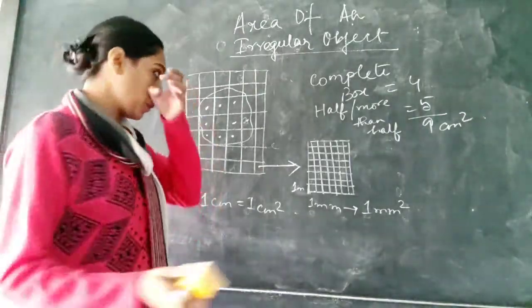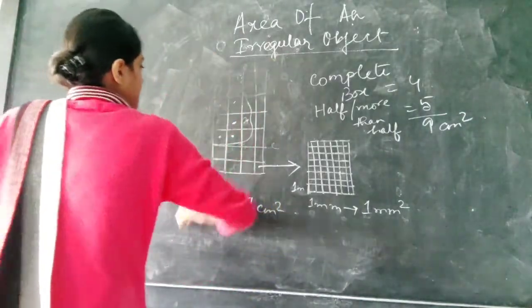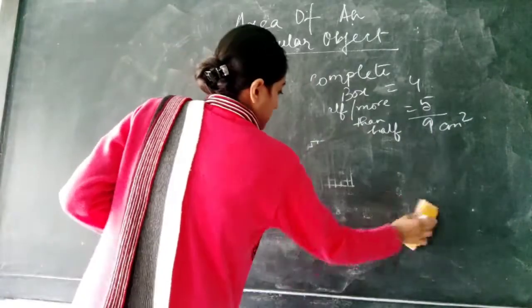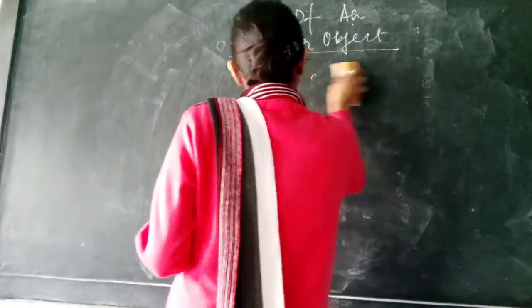You can find the area of the irregular object like this by using the graph paper. Now next we will go to the topic of density. You have heard about this density.